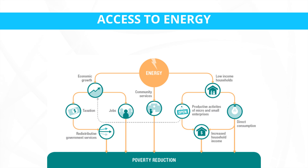Step 3: Education and empowerment — raising awareness and providing training on energy usage and income-generating activities powered by energy access. Step 4: Monitoring and evaluation — continuously assessing the impact of energy access on poverty indicators and making necessary adjustments.